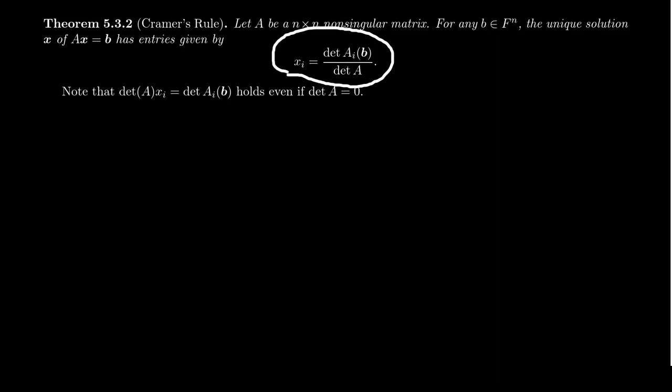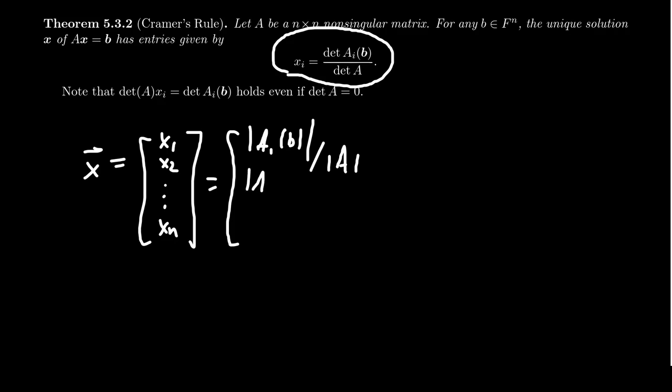That unique solution can be given by the following formula: if the solution is x, then x_i, the i-th entry in the vector x, is given by x_i = det(A_i(b)) / det(A). Another way of writing it: our vector x with entries x_1, x_2 up to x_n has first entry det(A_1(b)) / det(A), second entry det(A_2(b)) / det(A), and so on. For the n-th entry, you replace the n-th column with b, take that determinant, and divide by det(A).